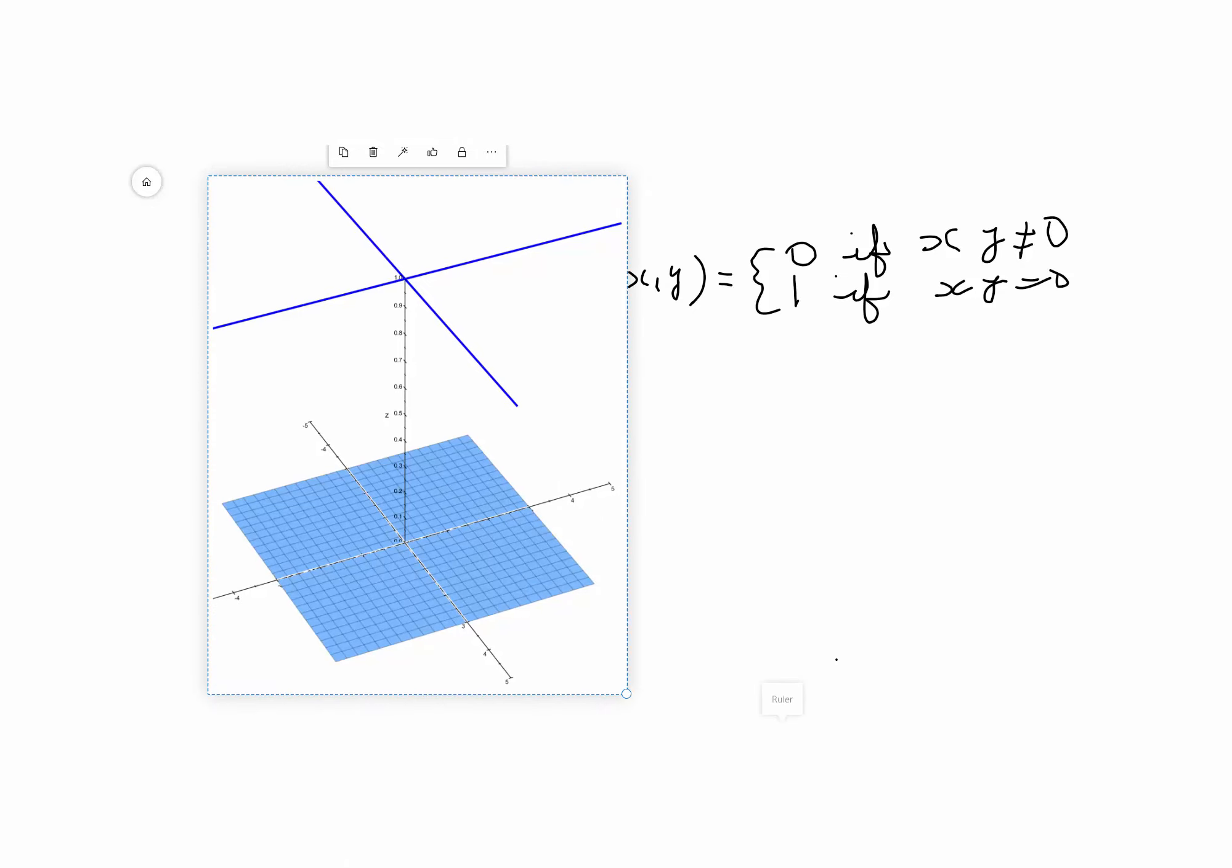Now, if you look at the function, you can see f(0, 0) is 1. But if I approach the origin via the line y equals x,